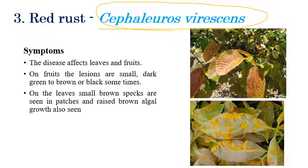Sometimes we can also see symptoms on the upper surface, but mostly on the lower surface we can see brown, orange, or red color rust pustules clearly. These pustules are slightly raised. Slightly raised, brown, red, or orange color rust pustules can be clearly seen on leaves. Some lesions can also be formed on fruits but these are negligible.